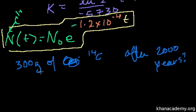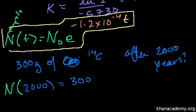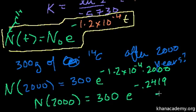Well, I just plug into the formula. N of 2,000 is equal to the amount that I started off with, 300 grams, times e to the minus 1.2 times 10 to the minus 4 times t, times 2,000. So what is that? So this is equal to 236 grams.